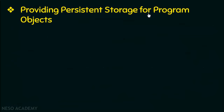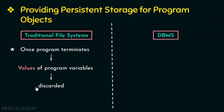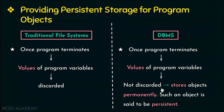The next advantage is providing persistent storage for program objects. Just as we have object-oriented programming, we have object-oriented database systems. In the traditional file system, values of program variables are discarded once the program terminates. In the DBMS approach, the values are not discarded when the program terminates — they allow program objects to be stored permanently, and such objects are said to be persistent.